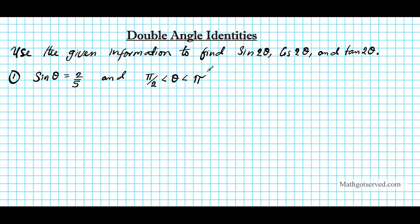Let's look for the first piece, sine 2θ. Using your double angle identities, sine 2θ equals 2 sine θ cosine θ. So in order to find sine 2θ, we need sine θ and cosine θ. We're given sine θ, so how can we find cosine from sine?